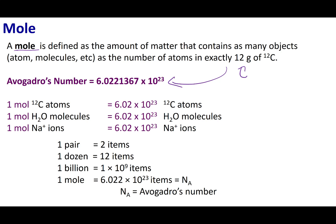But I want you guys to get a handle of what I'm saying. If I tell you I have a pair of objects, that means I have two items. If I have a dozen of something, that means I have 12 items. If I have a billion of something, I have one times 10 to the ninth items. So when I say I have a mole of something, that means I have 6.022 times 10 to the 23rd of those items.